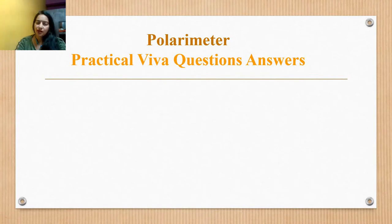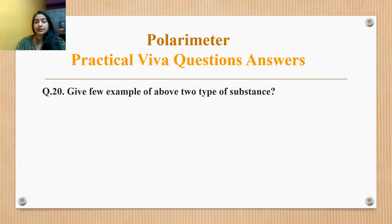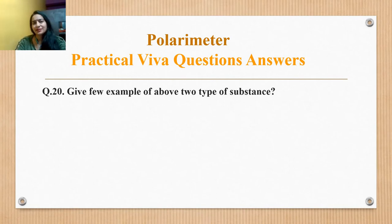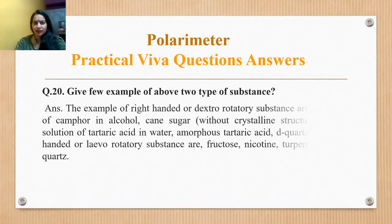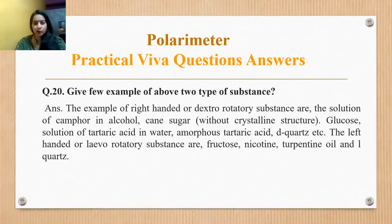Give examples of the above two types of substance. Right-handed or dextrorotatory substances include solutions of camphor in alcohol, cane sugar — which we are discussing for specific rotation — glucose, solution of tartaric acid in water, amorphous tartaric acid, and d-quartz. Left-handed or levorotatory substances include fructose, nicotine, turpentine oil, and l-quartz.